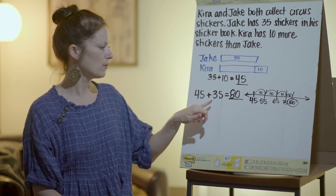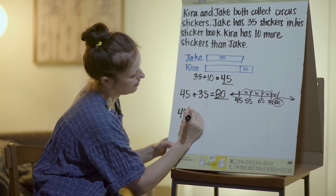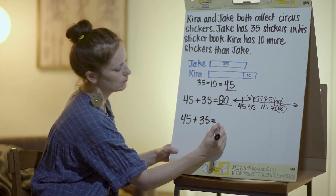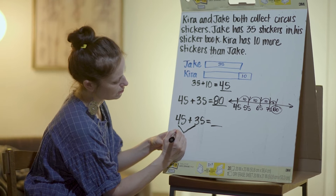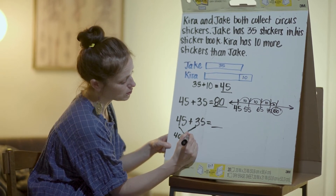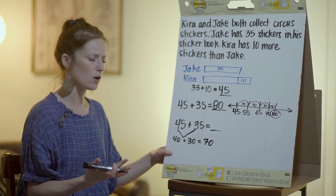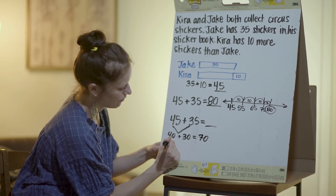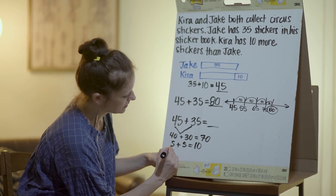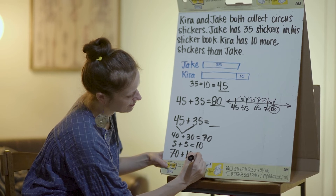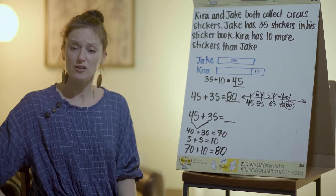There's another way I could solve this — by adding using place value. So we have 45 plus 35. We start by adding our 10s: four 10s is 40, and three 10s is 30, so 40 plus 30 equals 70. Now we add our 1s: 5 plus 5 equals 10. Then we add those two results together: 70 plus 10 equals 80. So that is another way you could solve it.